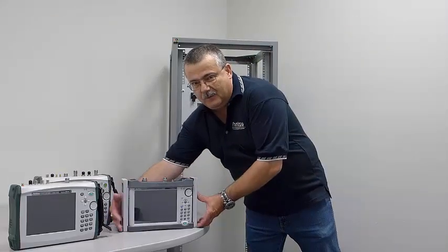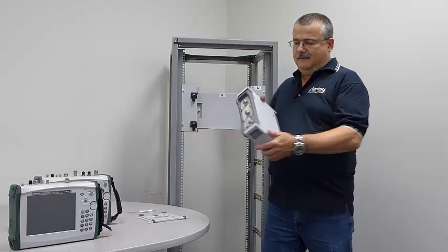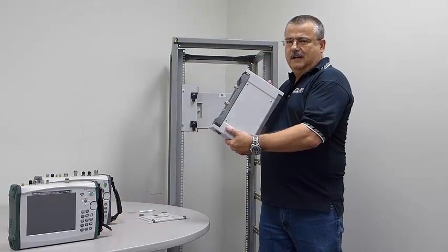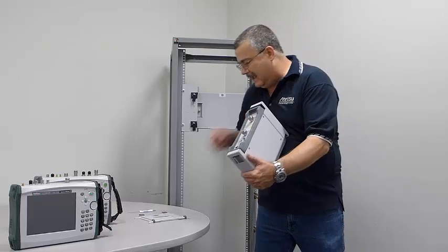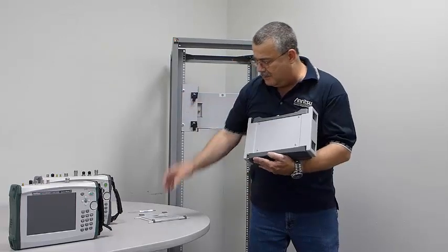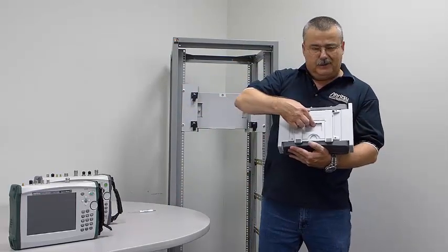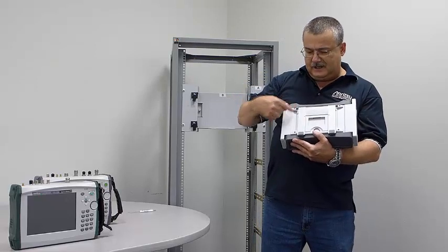All right, so what we've done now is we've gone ahead and we pre-installed the bracket C onto the back of the economy instrument. And that was done simply by removing the factory installed steel bail handle, which is normally here. It's held on with four screws.